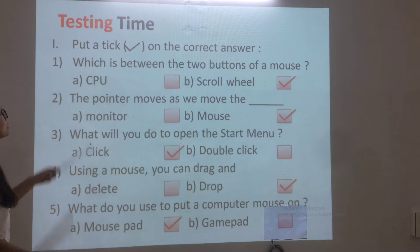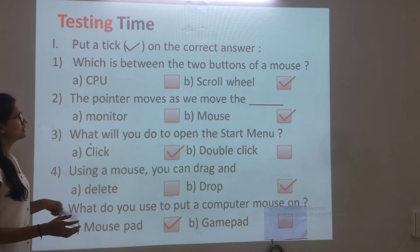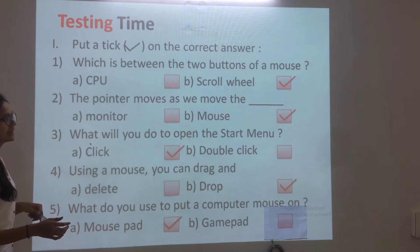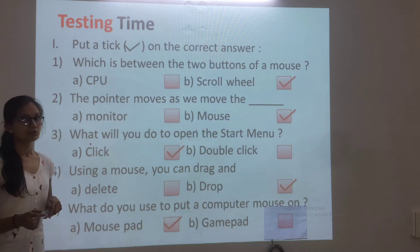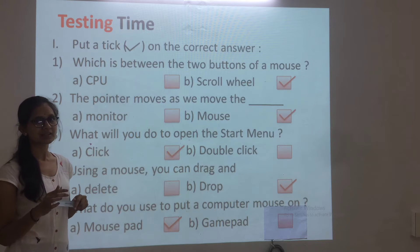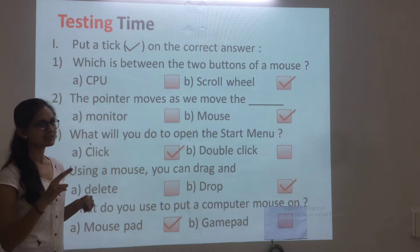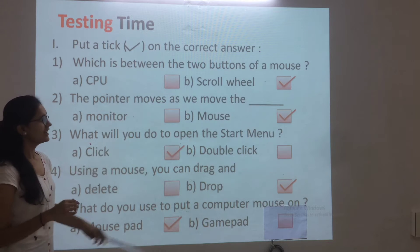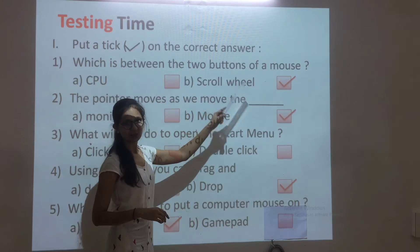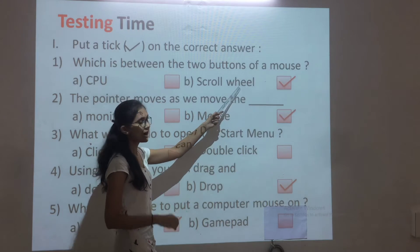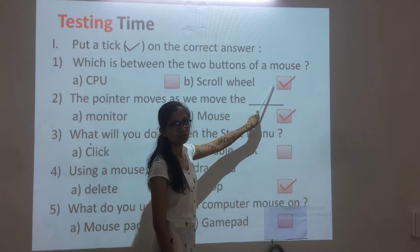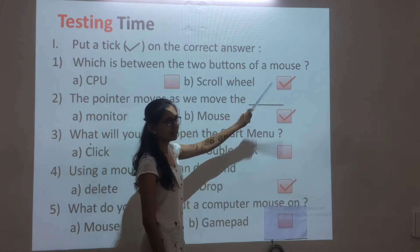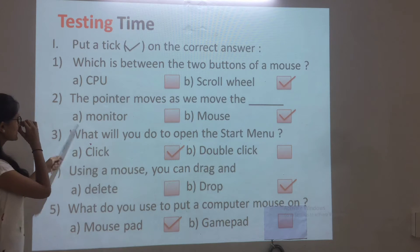Testing type: put a tick on the correct answer. The first question is: what is between the two buttons of a mouse? The answer is the scroll wheel.